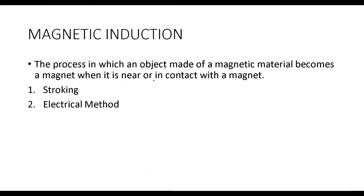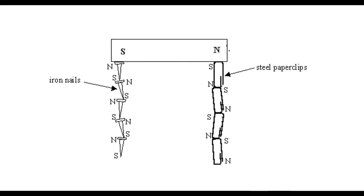We can magnetize iron through magnetic induction, which is the process in which a magnetic substance becomes a magnet when it comes in contact with a magnet. When you bring a bar magnet close to iron nails or steel paper clips, they are attracted towards the magnet. These substances will now have aligned magnetic domains and will show magnetic properties. Since opposite poles attract, if this is the south of the bar magnet, then this will be the north of the iron nail. It will pass on its magnetic properties to all other magnetic substances that come in contact with it — this is how induced magnetism occurs.